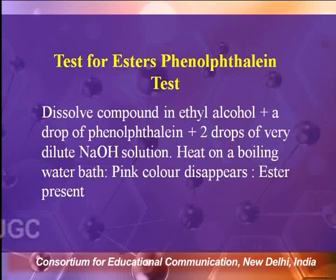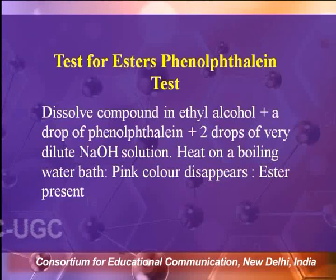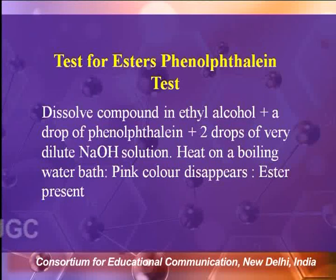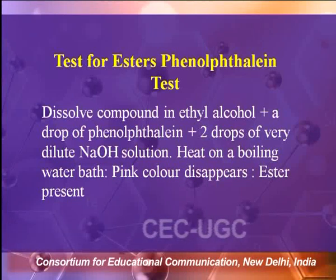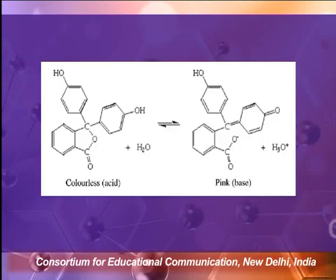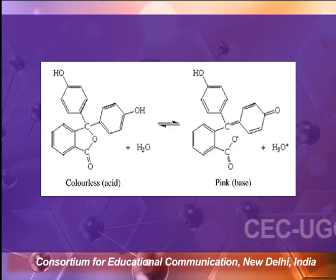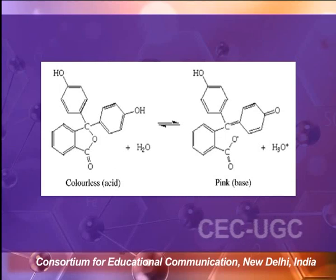Test for esters — esters are RCOOR', an acyl group along with an alkoxy or aryloxy group. The first test is the phenolphthalein test. Dissolve the given organic compound in ethyl alcohol, then add a drop or two of phenolphthalein and very dilute NaOH solution, and heat on a boiling water bath. If a pink color disappears, an ester compound may be present. In an acidic medium, phenolphthalein is colorless; in an alkaline medium, the color is pink.